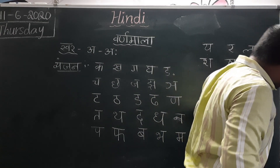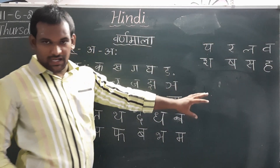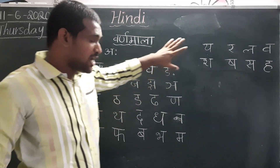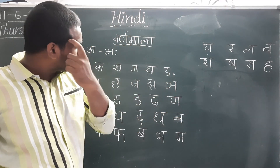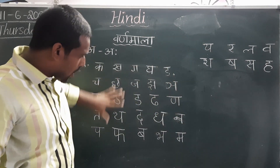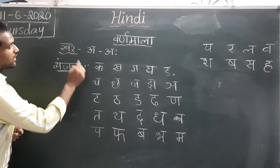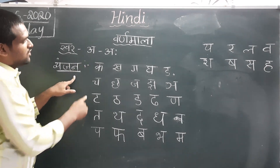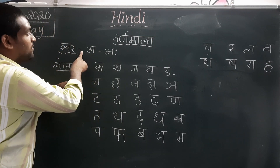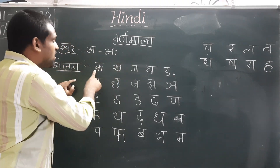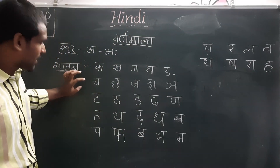Now I will move to the main part of the Varnamala. I think you have understood all the Vyanjan. Vyanjan are from Ka to Ha, and Swar are from A to Aha. Ka to Ha are all Vyanjan.